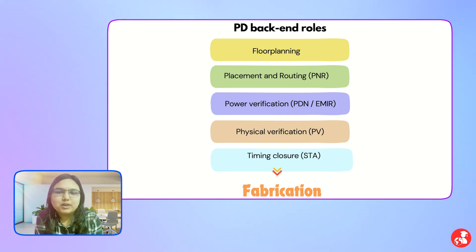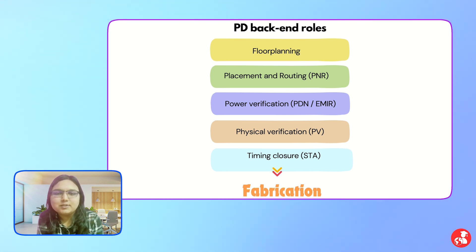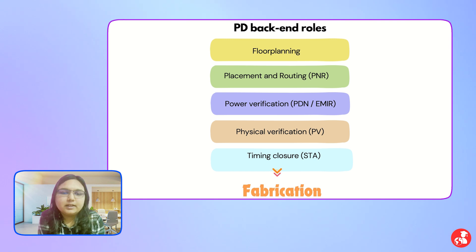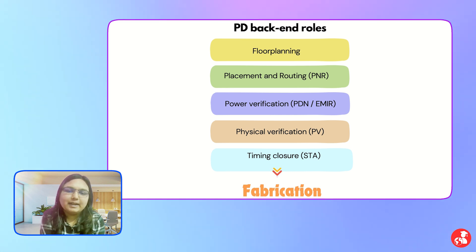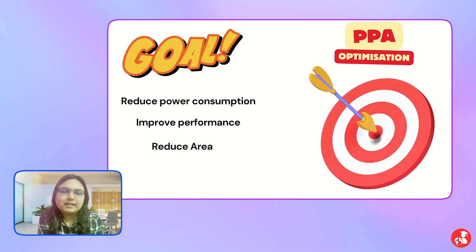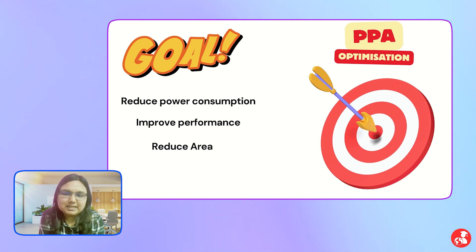Our job is to work on the netlist and create a layout by going through various stages such as floor planning, placement, routing. Then, whatever layout is prepared, we need to do power verification, then physical verification, then timing closure. At the end, when all the criteria given by TSMC constraints are met on our side, we send the final GDS for manufacturing to TSMC. All these processes are sub-domains in physical design.